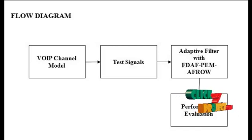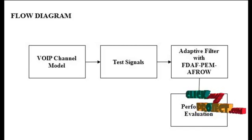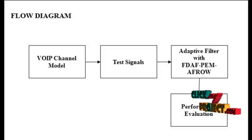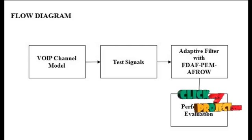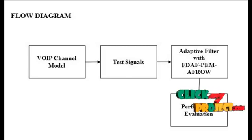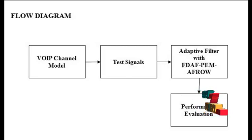The adaptive filter with FDAF PEM-AF-ROW is made up of two components: the echo estimator and the subtractor. The echo estimator monitors the received path, and the subtractor eliminates the near-end path of echo cancellation.